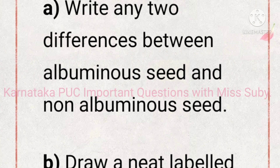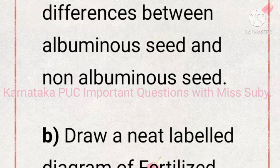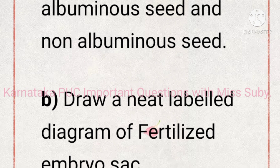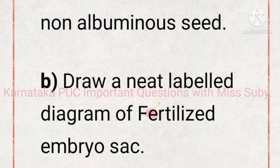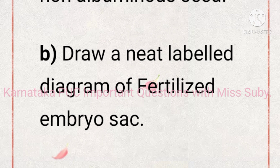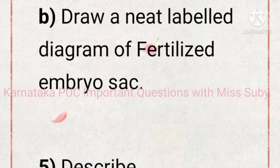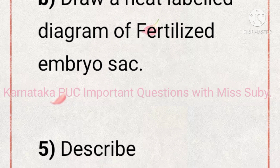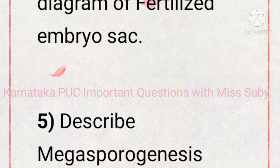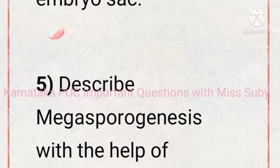The first part of question four is: write any two differences between albuminous seed and non-albuminous seed. The second part is: draw a neat labelled diagram of a fertilized embryo sac. In the fourth question, it may be asked for three marks and two marks, or two marks and three marks, based on the question paper.